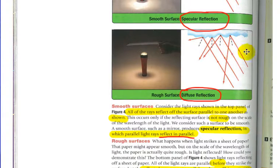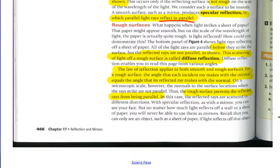Because here it's angled this way, therefore the perpendicular is angled like this. So after making the normals, the law of reflection holds true for each individual ray. But overall, those angles of reflection are different compared to other rays. So that's what's mentioned here. On a microscopic scale, however, the normals to the surface locations are not parallel. Thus, the rough surface prevents the reflected rays from being parallel.